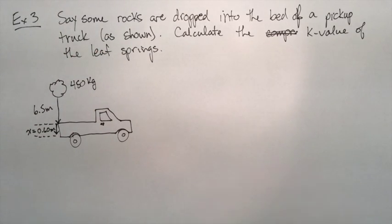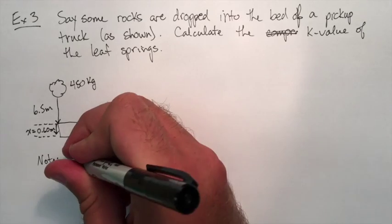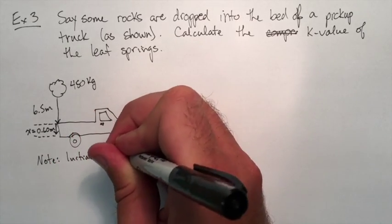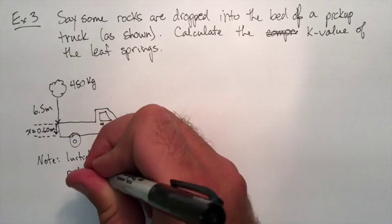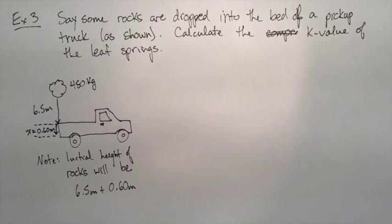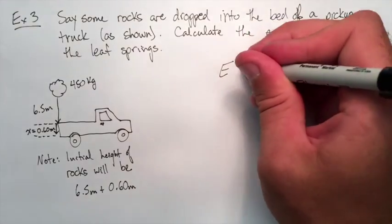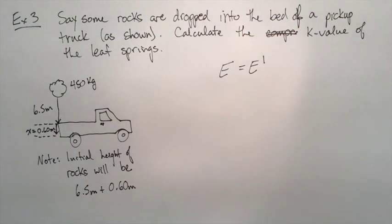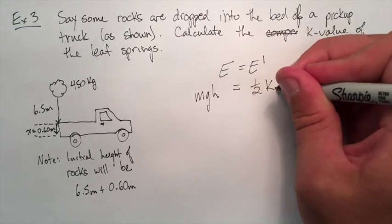We need to make a note though. So it's convenient when we're solving problems with energy that the lowest point in our problem should be taken as 0 meters for height. So this means those rocks are going to start out at the total height of 6.5 plus 0.6 meters if we consider that bottom position to be our zero height for the problem.